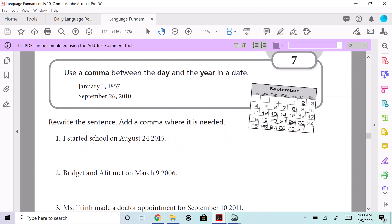1857. September 26th, comma, and then the year. I started school on August 24th, 2015, so that's going to be right here. Ready? Here's the day. I put the day.